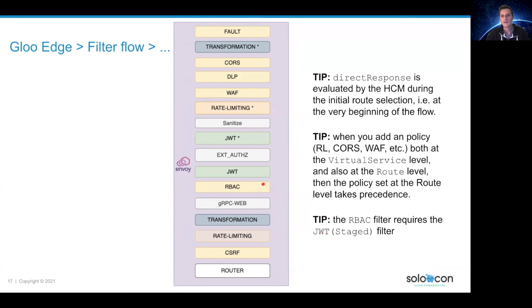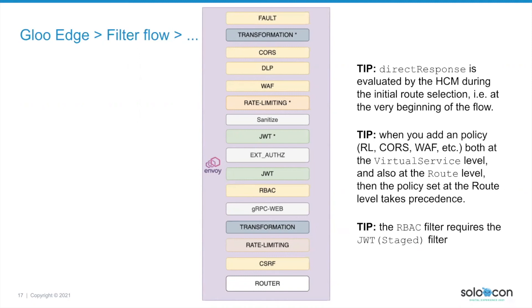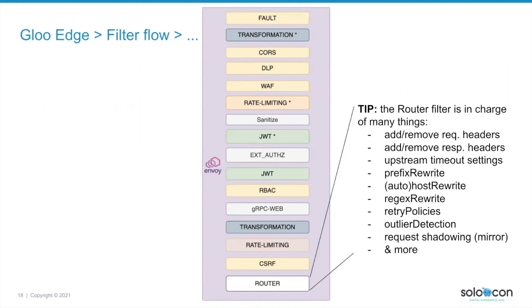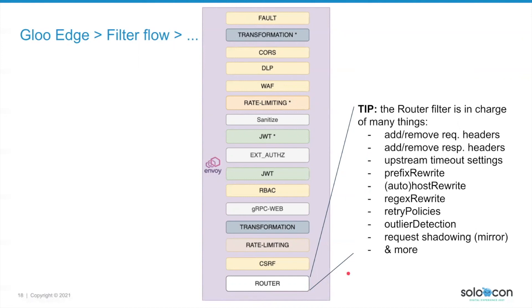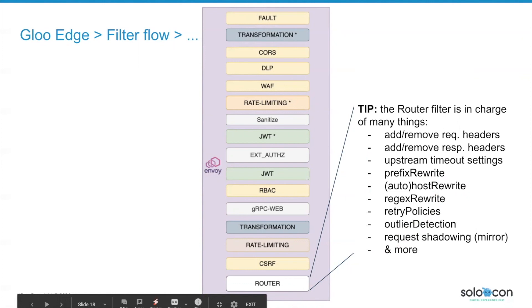The RBAC filter requires the JWT filter to read the principal. Also, all of these filters are applied only if you use the associated options — otherwise they are not active. The final filter in the flow is the router filter. This one is in charge of adding or removing request or response headers, and also applying prefix rewrite, host rewrite, or regex rewrite, as well as everything related to upstream servers like timeout settings, retry policies, and outlier detection.